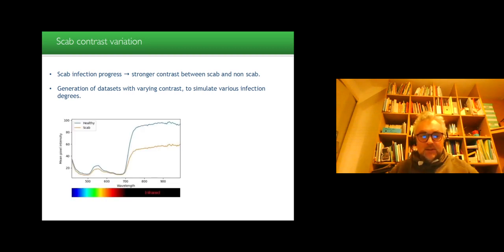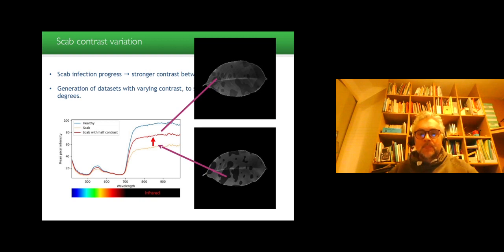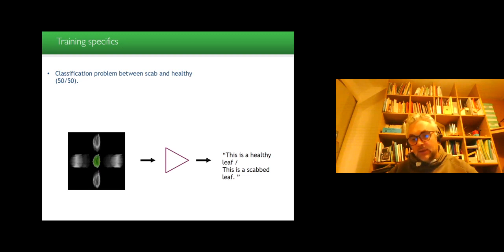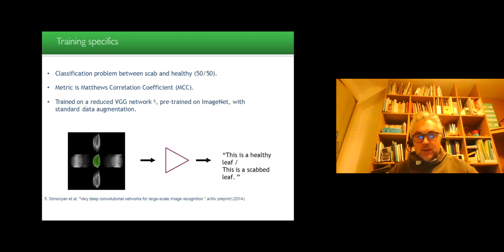The scab infection progress so that there is a stronger contrast between scab and non-scab, and the generation of data set with varying contrast to simulate various infection degrees was added. So for instance, we have the scab and the healthy, and we generated a kind of interpolated line to simulate the various level of infection between healthy and scab. So the specifics for the training, the classification problem between healthy and unhealthy. We provide, we train a neural network with such data set, and we ask if it's healthy or non-healthy. And we use as metric the Matthews correlation coefficient, the MCC. We train on a reduced VGG network because images were rather small, pre-trained on ImageNet with a standard data augmentation.